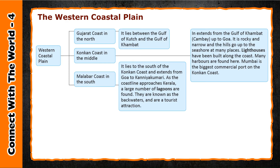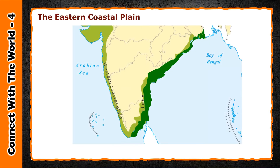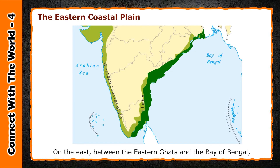The Malabar coast lies to the south of the Konkan coast and extends from Goa to Kanyakumari. As the coastline approaches Kerala, a large number of lagoons are found. These are known as the backwaters and are a tourist attraction.